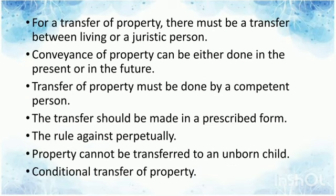Essential Elements of the Transfer of Property Act 1882: For the transfer of property, there must be a transfer between a living or a juristic person. Second, transfer through conveyance — conveyance of property can be either done in the present or in the future, but it is necessary to ensure nothing is transferred before the title. The transfer of property must be done by a competent person. For a valid transfer, it is necessary that the transferor should be of sound mind, should not be intoxicated, and should be a major.